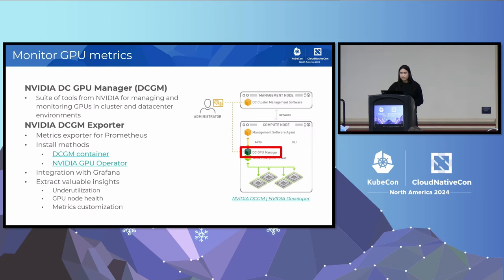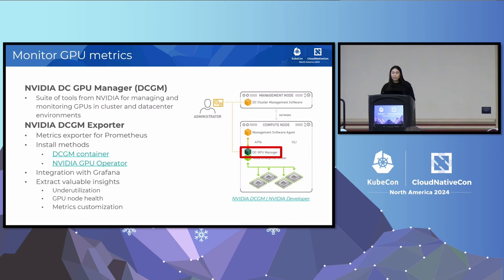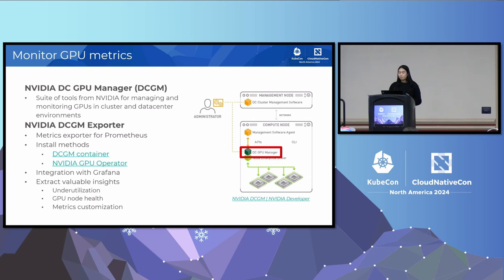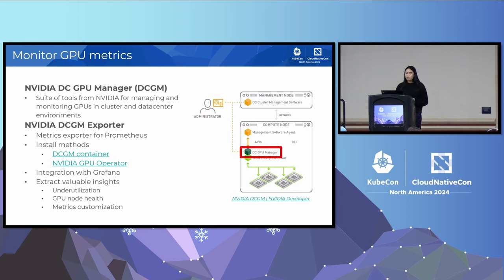The NVIDIA DC GPU Manager, DCGM for short, is a suite of tools for managing and monitoring your NVIDIA GPU clusters and data center environments. It provides health monitoring, comprehensive diagnostics, system alerts, governance policies, and a whole bunch of great telemetry metrics. DCGM really is the foundation for a lot of GPU monitoring capabilities. The DCGM also integrates into the Kubernetes ecosystem through the DCGM exporter, which provides GPU telemetry in containerized environments by exposing GPU metrics at an HTTP metrics endpoint, integrating seamlessly with tools like Prometheus and Grafana.